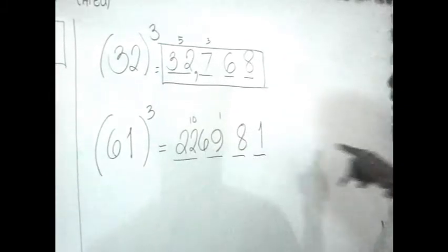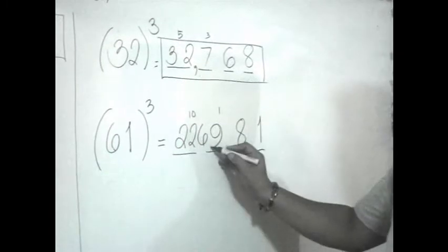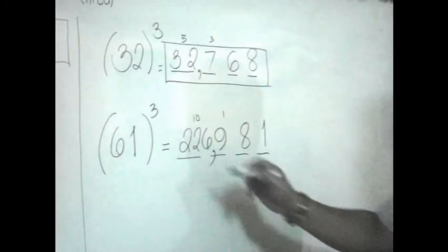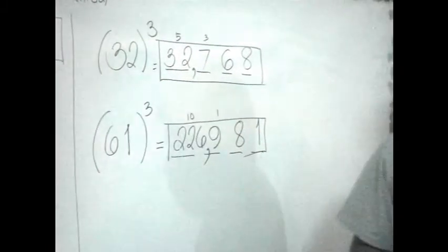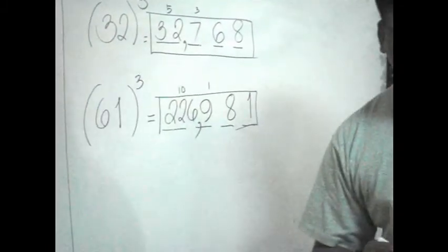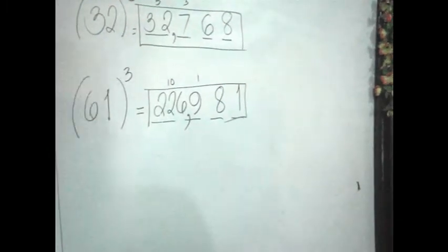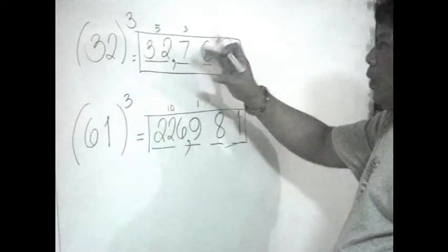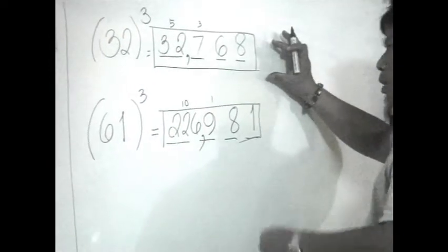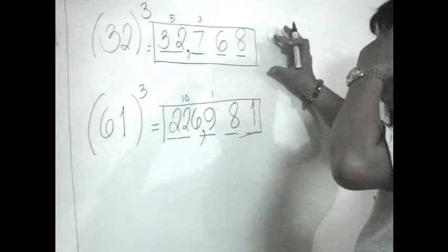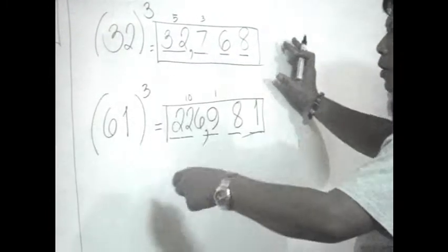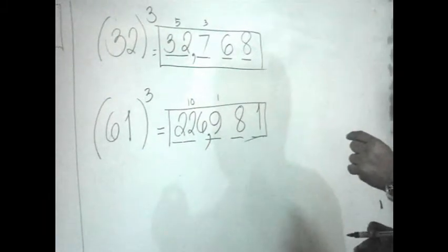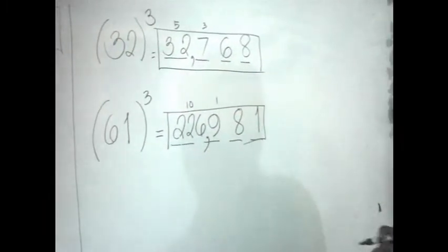That completes 61³, which equals 226,981. We solved it in one line using our minds, knowing the cube of each digit. The cube of each single digit plays an important role in cubing any larger number.